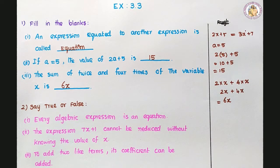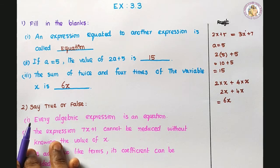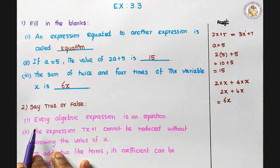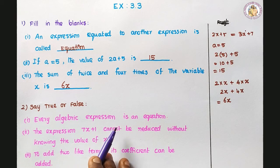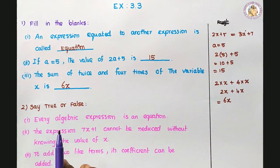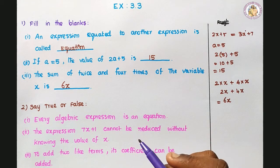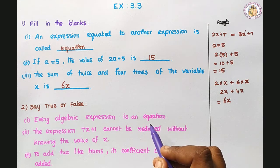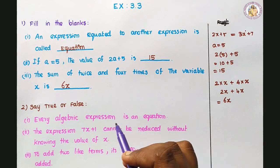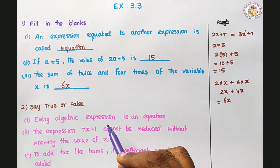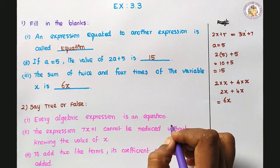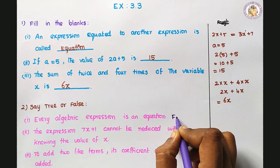Next: true or false. Every algebraic expression is an equation — is it true? No. Every equation is an algebraic expression, but every algebraic expression is not an equation. So that is false.